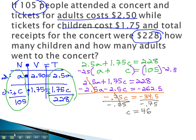We still need to find the number of adults, and we can do so by plugging this back in to one of the original equations. The last equation, a plus c equals 105, is probably the easiest place to go.